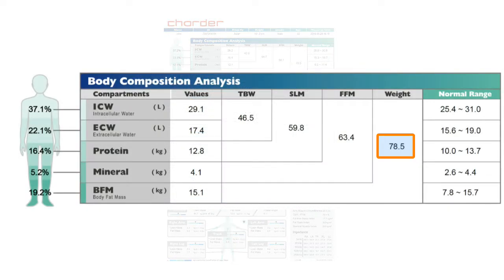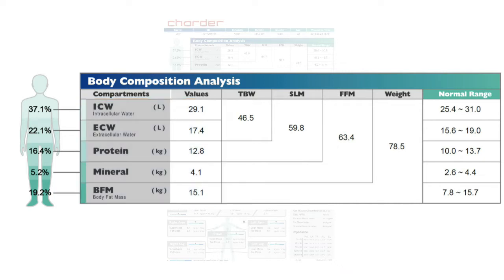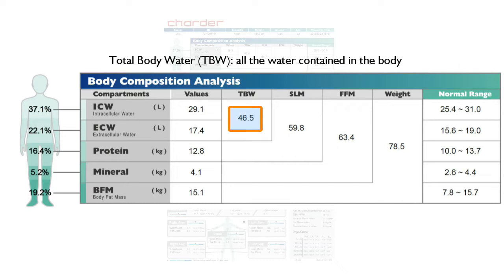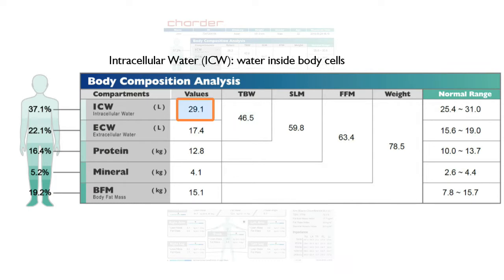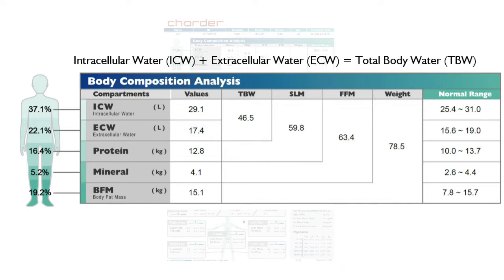Your body weight is made up of five different compartments. Let's start with body water. TBW on the results sheet means total body water, and that's what you get when you combine intracellular water, which is the water inside your cells, and extracellular water, which is the water outside your cells. Body water oftentimes correlates with muscle mass, as muscle is high in water content.